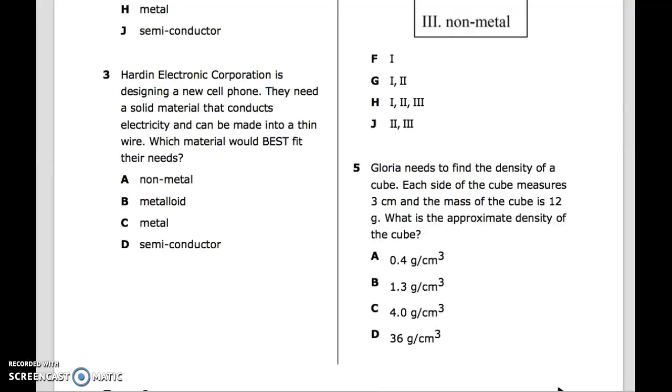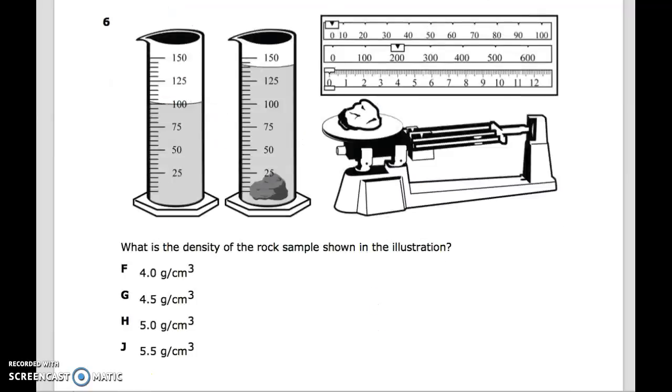Question 5: Gloria needs to find the density of a cube. Each side of the cube measures 3 cm, and the mass of the cube is 12 grams. What is the approximate density of the cube? Number 6: What is the density of the rock sample shown in the illustration?